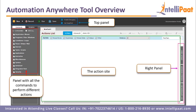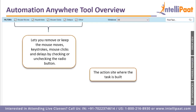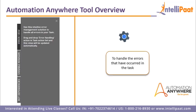Our next topic is the Automation Anywhere tool overview. We have a top panel, an action side panel with all the commands to perform different actions, and a right panel. The top panel has a new button to start a new task recording — it mimics the actions performed when recording and replays them exactly when run. Save is to save the built task, set snap point saves the program at any state, and enable debugging identifies and removes errors. The action site is where we build the task and has filters to remove or include mouse moves, keystrokes, mouse clicks, and delays using radio buttons. The right panel's error view handles all errors that have occurred in the task.